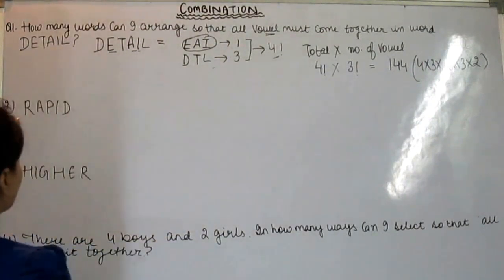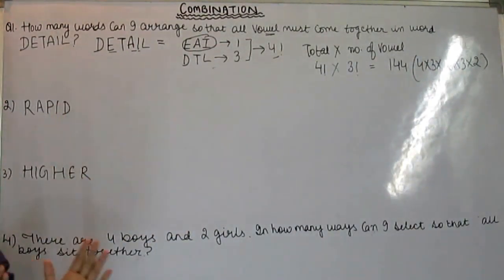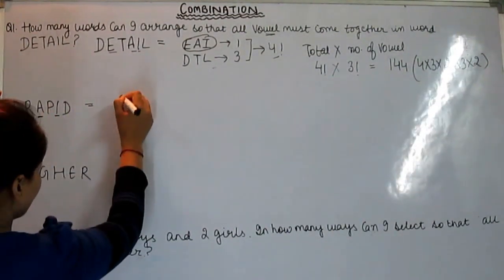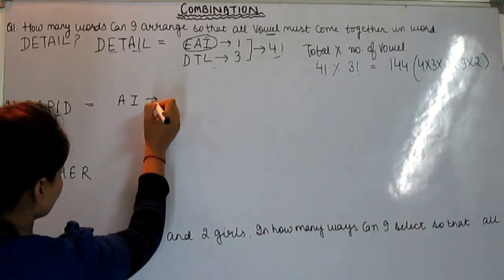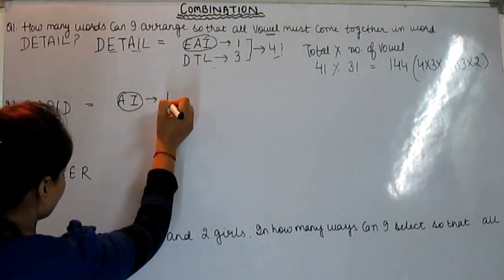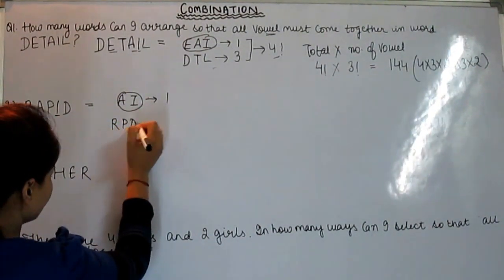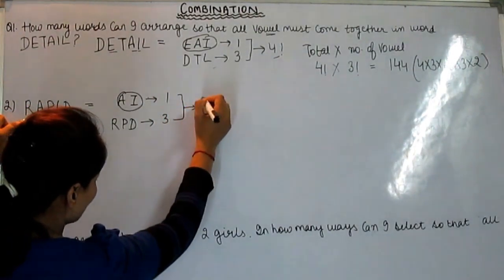Next is rapid. Now we will arrange the word rapid so that all vowels come together. Rapid has how many vowels? A and I. We will keep these together. How many consonants? R, P, D. Total, how many sections? Four.